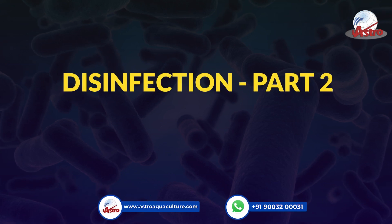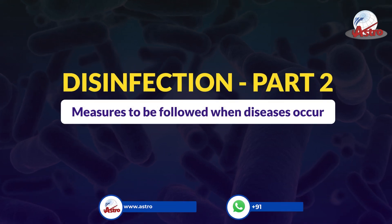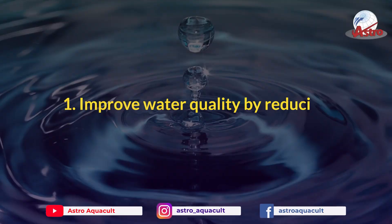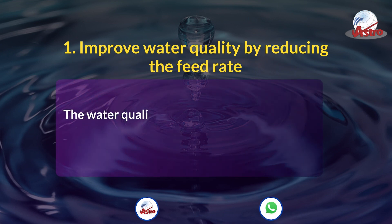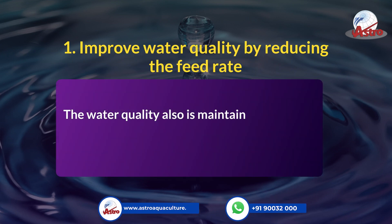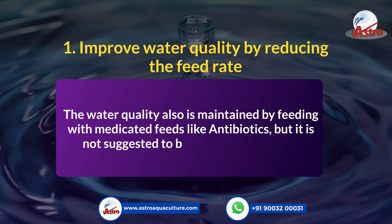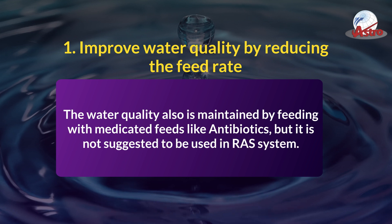Disinfection, Part 2: Measures to be followed when diseases occur. Measure 1: Improve water quality by reducing the feed rate. Water quality can also be maintained by feeding with medicated feeds like antibiotics, but this is not suggested for use in a RAS system.